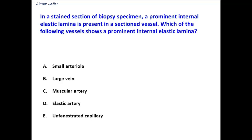The internal elastic lamina is a collection of elastic fibers that form a crumpled line as seen in sections, located between the tunica intima and the tunica media in some blood vessels.